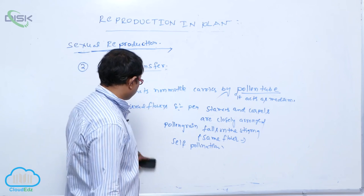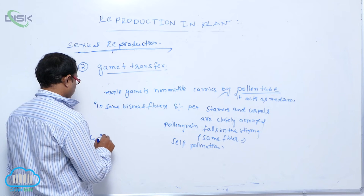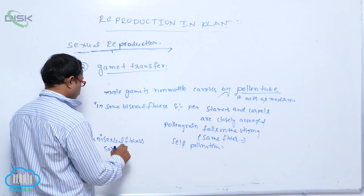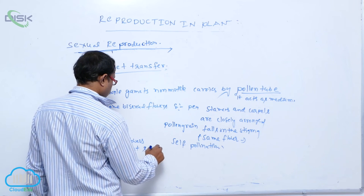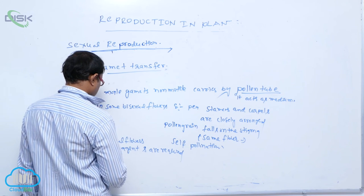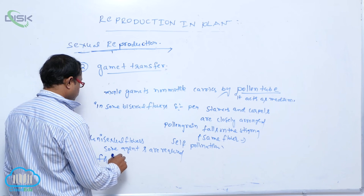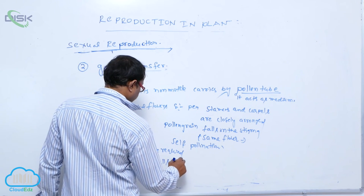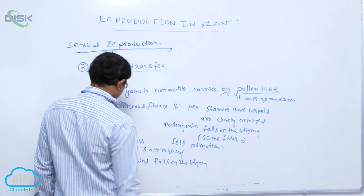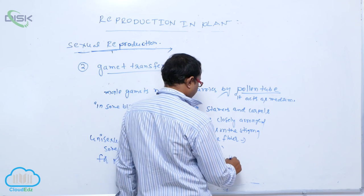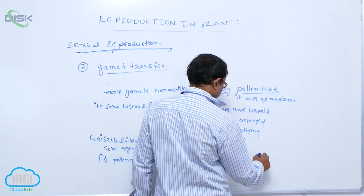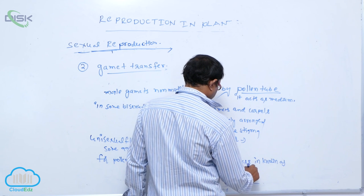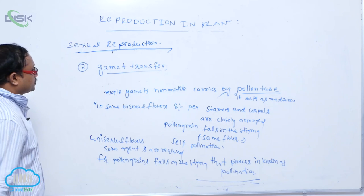But in most cross-pollinated plants, mainly in that unisexual flowers, some agents are required for pollen grains to fall on the stigma. That process is known as pollination. Pollination is necessary in cross-pollination plants. It is known as cross-pollination. That is known as gamete transfer.